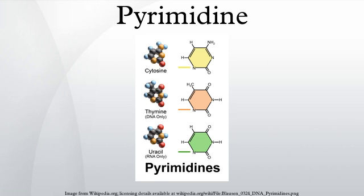One such manifestation is observed in the Dimroth rearrangement. Pyrimidine is also found in meteorites, but scientists still do not know its origin. Pyrimidine also photolytically decomposes into uracil under UV light.